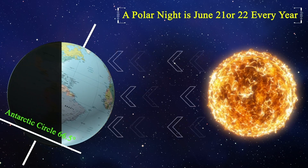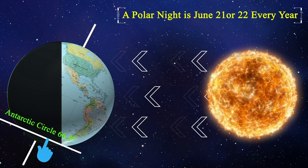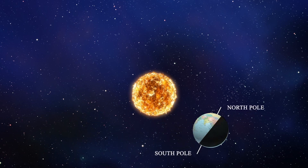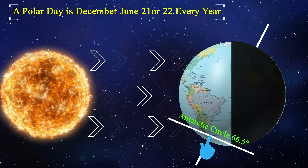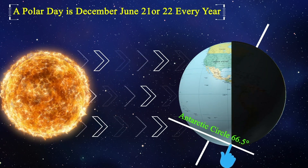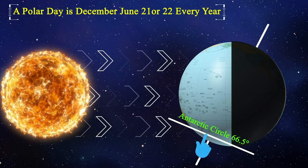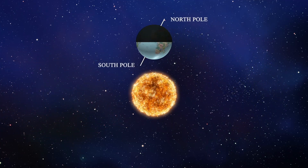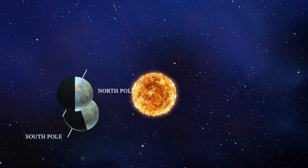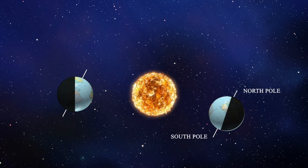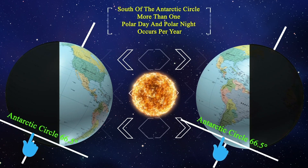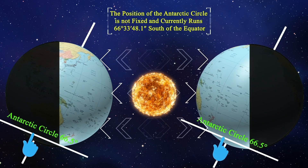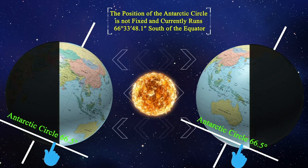Polar Night in the Antarctic is 24 continuous hours of darkness and occurs June 21st or 22nd every year. Polar Day is 24 hours of continuous daylight and occurs December 21st or 22nd every year. It is also called the Midnight Sun.